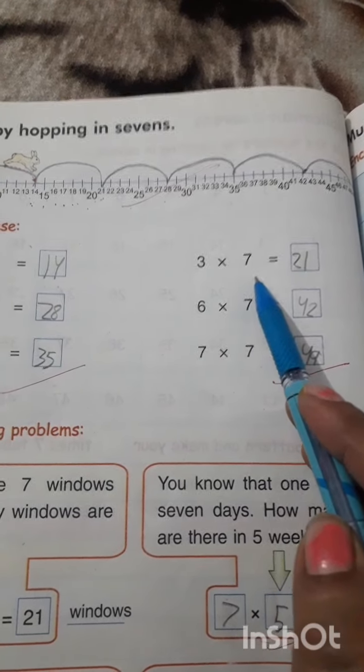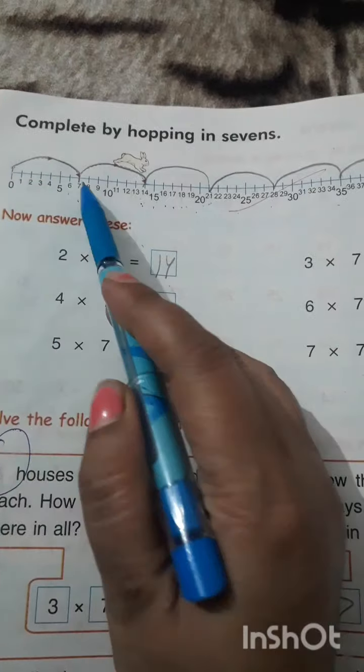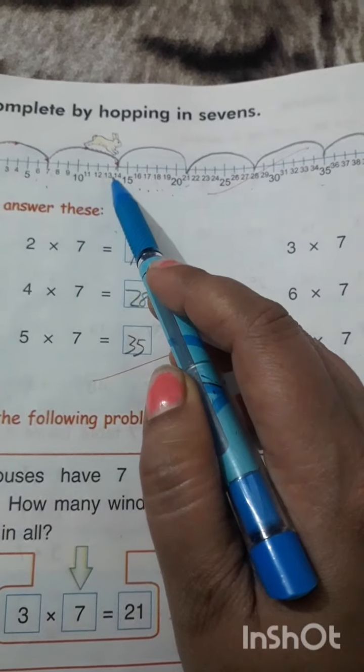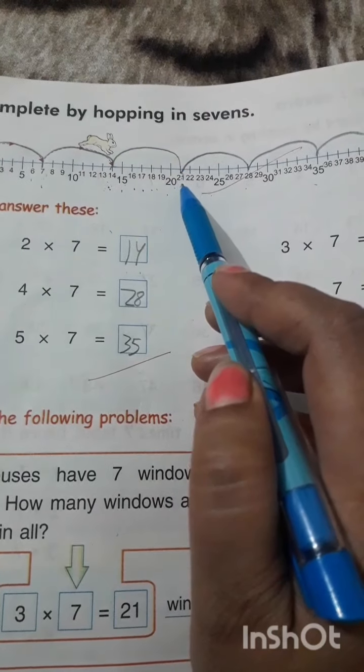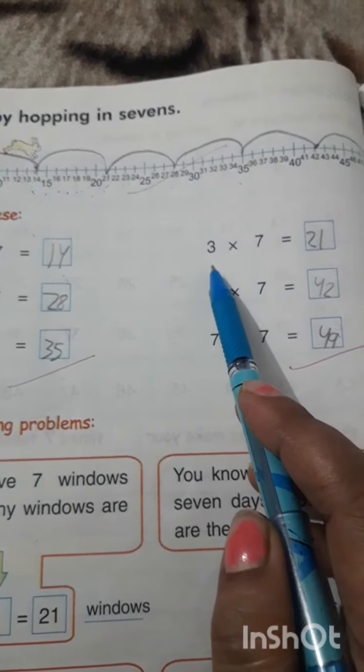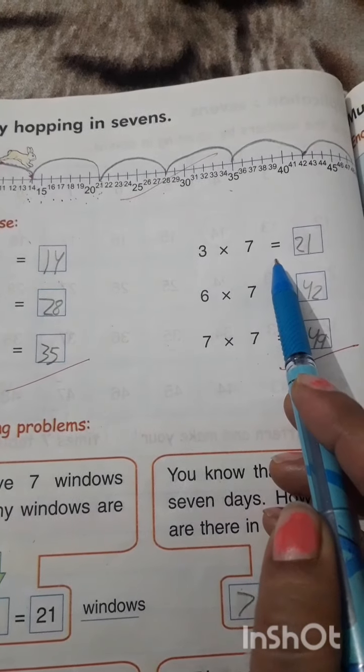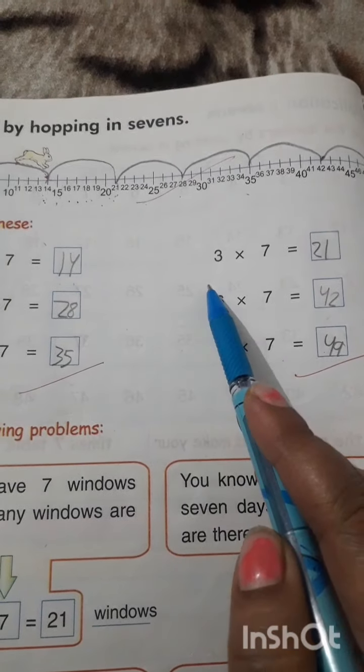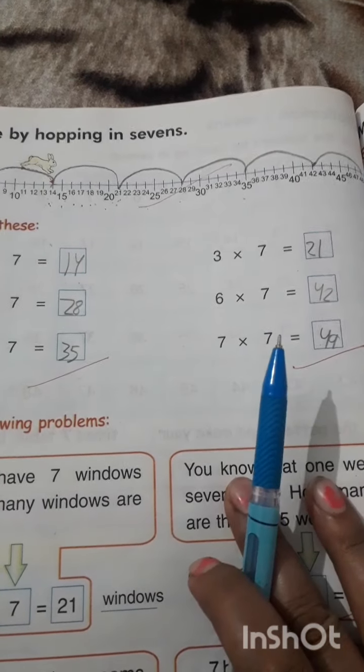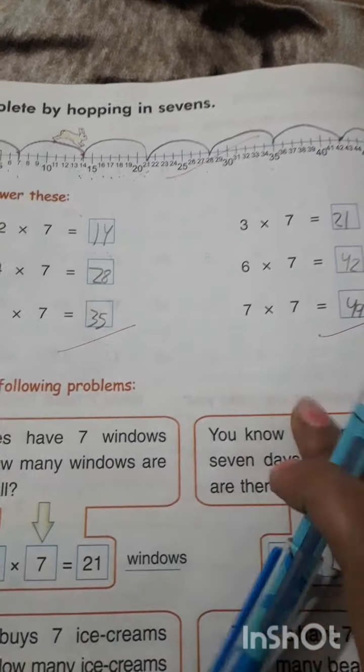3 times 7. 0 to 7, 1 time. 7 to 14, 2 times. And 14 to 21, 3 times. 3 multiply 7 is equal to 21. 3 7s are 21. Do rest of the parts yourself.